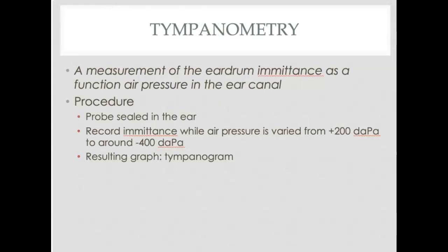Tympanometry is the most common test that we do, and it's a measurement of the eardrum admittance as a function of air pressure in the ear canal. If the pressure is normal behind the eardrum, then the admittance in the ear canal will be high. The graph for the tympanometry test is called a tympanogram, and it'll make sense once you see the graph.